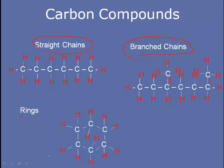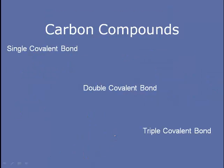Maybe the most common structure that we'll see are ring structures. Carbon atoms can form single, double, or triple covalent bonds with each other. For example, you can have two carbon atoms bonded to each other by a single bond, and the remaining spots are filled with hydrogen, which we're just going to draw as little sticks.